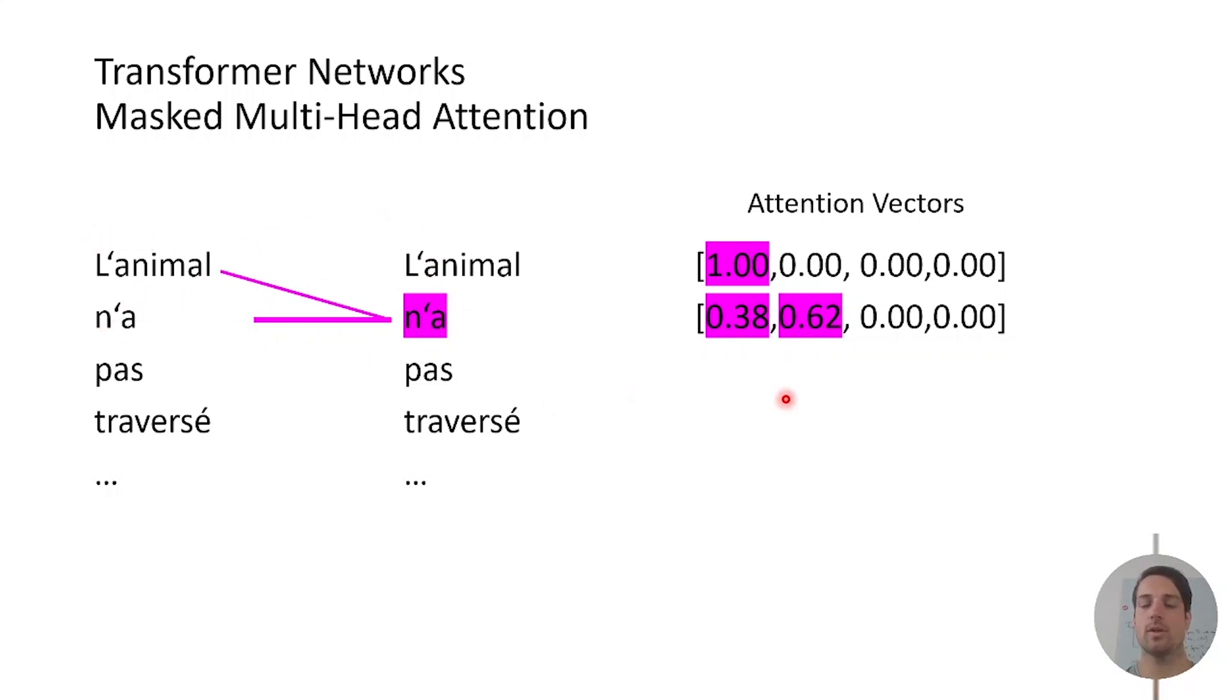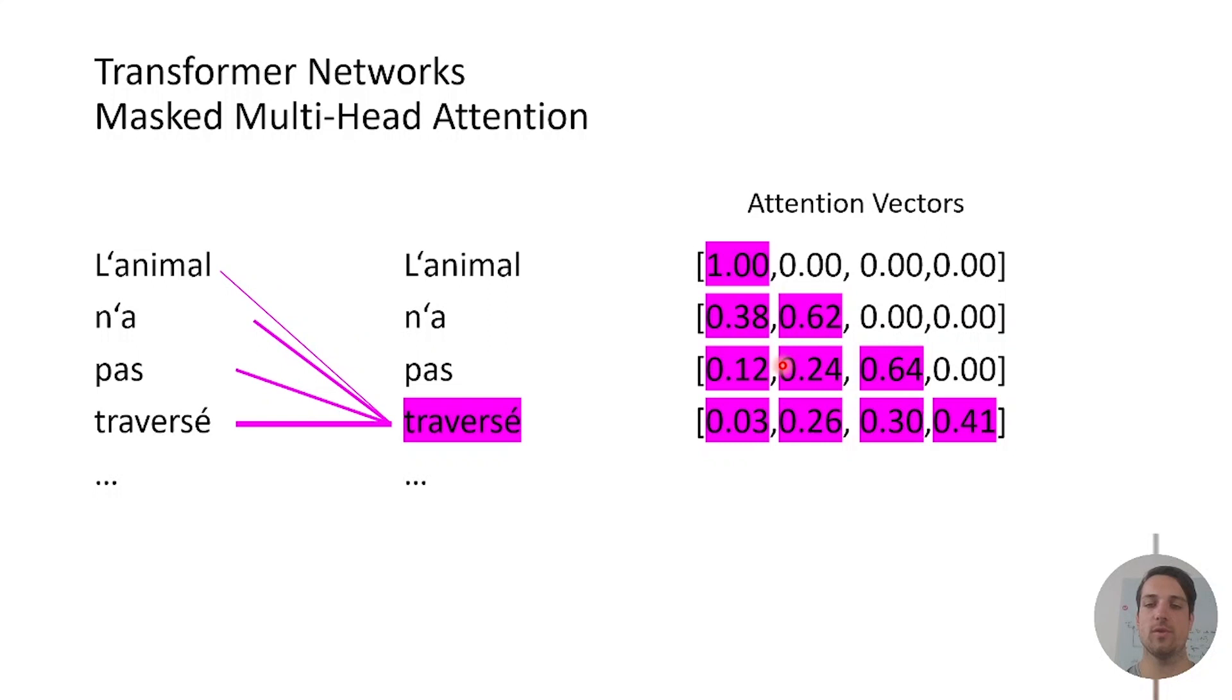If we now look on the second word it can take itself but also the previous word so we see that the attention starts to distribute more. As we do it for the whole sentence we see that for the last word it can take all the previous words into account. All the words before are previous so we don't have any information from the future. Just by that masking out we prevent the algorithm of having future data.